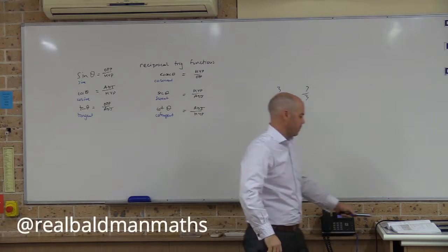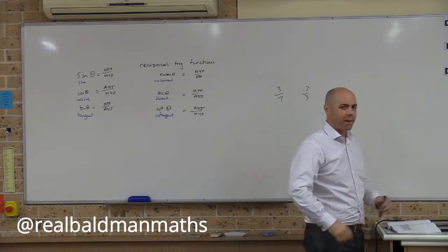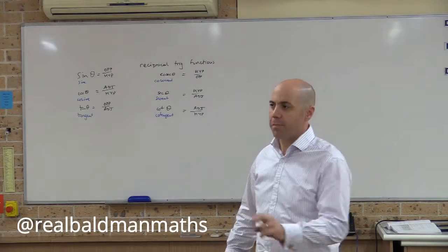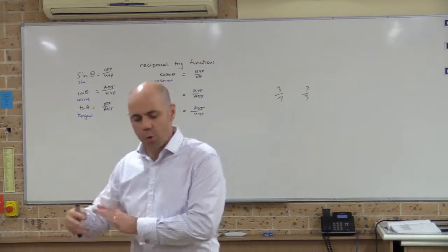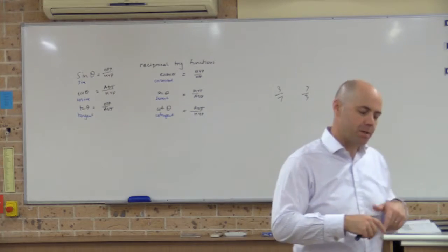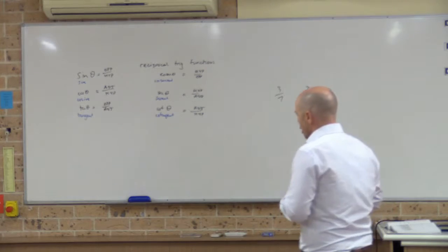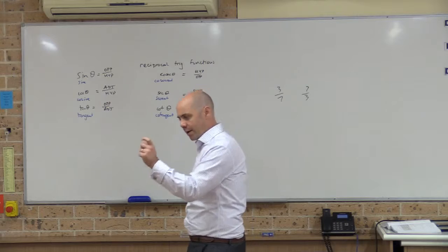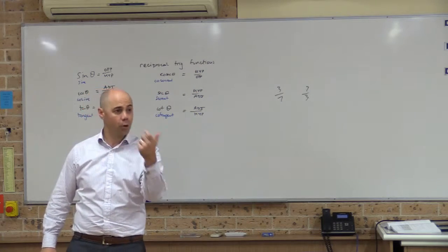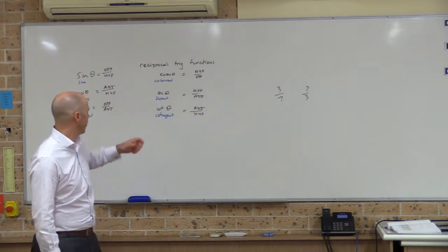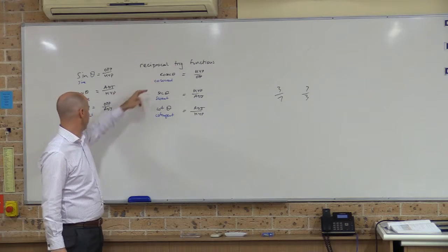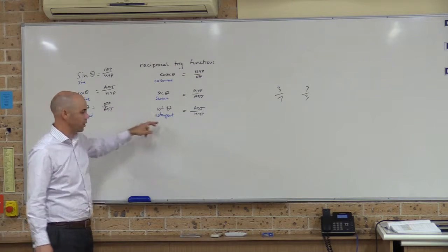There are three pairs of names. Each pair has one name and then the other has the same name with 'co' in front of it. So there is sine and cosine, secant and cosecant, and tangent and cotangent.